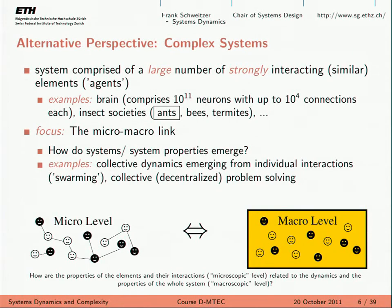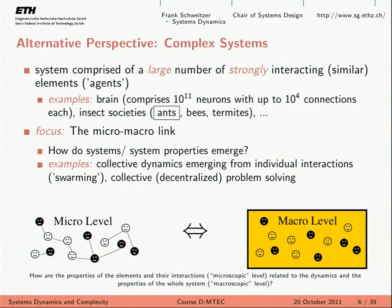If you have many elements with many connections, that's a complex system — or a candidate, let me put it that way. Another example is ants — probably the prototypical example of a complex system. Why? Because with ants there is no centralized decision making. There is no centralized policy as to how to search for food or how to search for a new home. The ants self-organize entirely via local interactions.